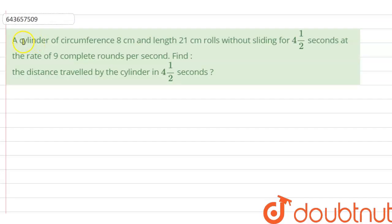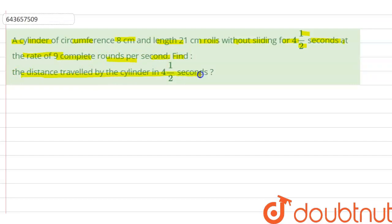Hi guys, we have a question right now. The question is: a cylinder of circumference 8 centimeter and length 21 centimeter rolls without sliding for four and half seconds at the rate of nine complete rounds per second. So let us first of all understand this question.